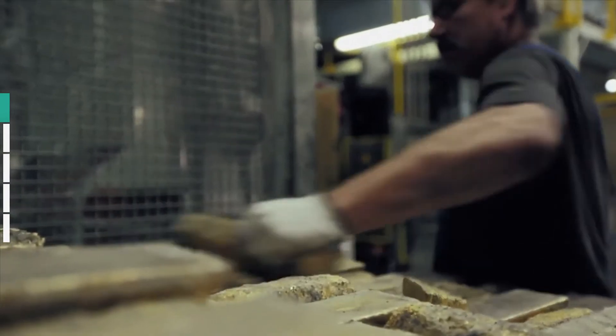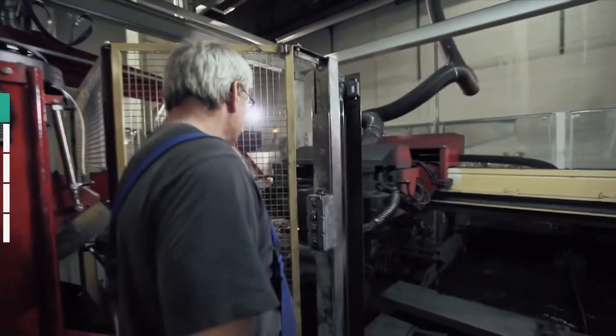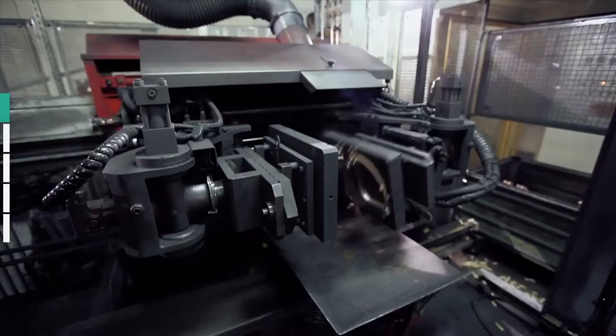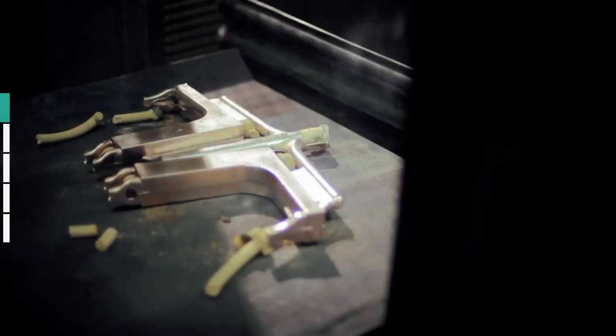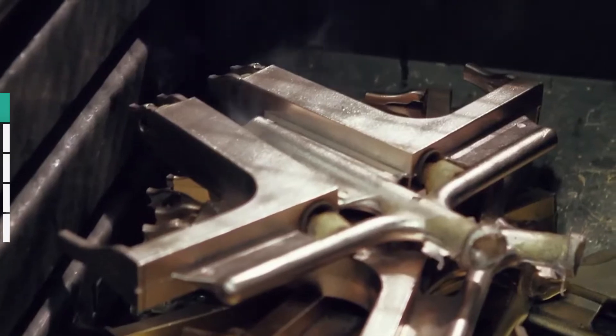Brass melts at just under 1000 degrees Celsius. During the low-pressure treatment, the liquid metal is pressed into the form with 0.3 bar from beneath. The hot air can escape upward. The adhesive in the sand core also dissolves at high temperatures. When the brass cools, the sand simply trickles away.